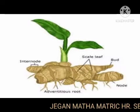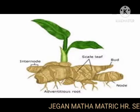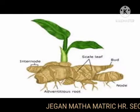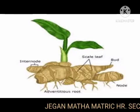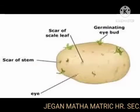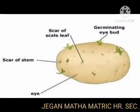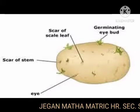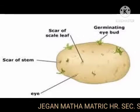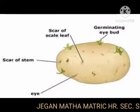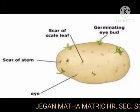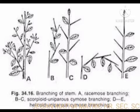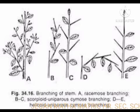Example of rhizome: Zingiber officinale. Tuber is a succulent underground spherical or globose stem with many embedded axillary buds called eyes, example Solanum tuberosum.